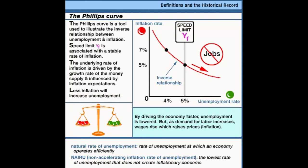This inverse relationship between the inflation rate and the unemployment rate — this menu of possibilities — is called the Phillips curve, after A.W. Phillips, who looked at the wage data from Britain.